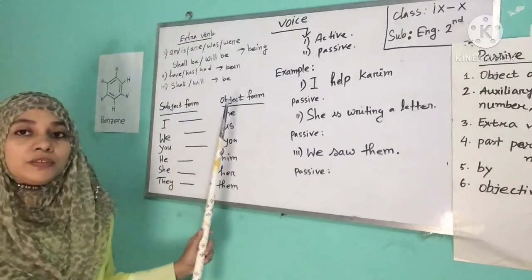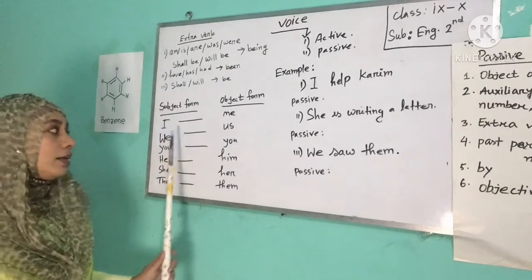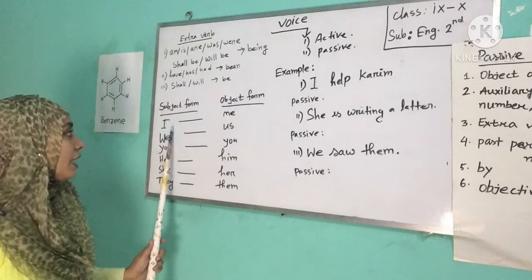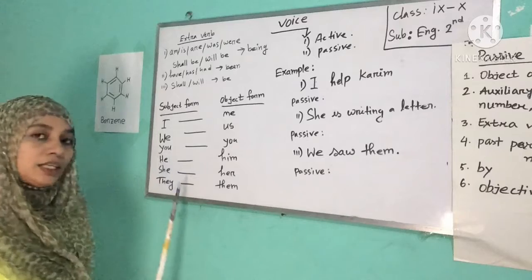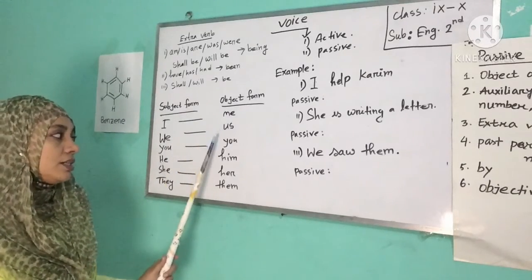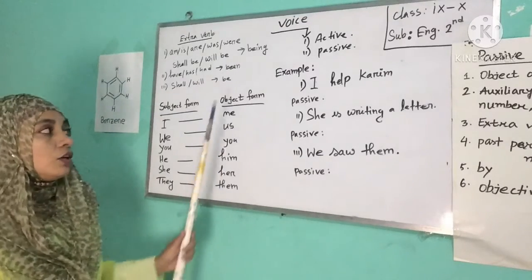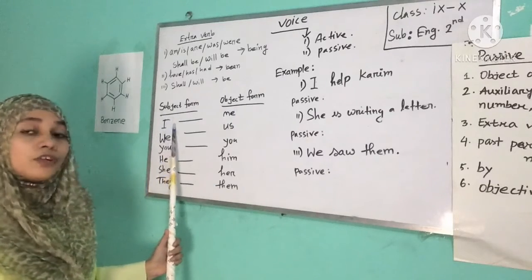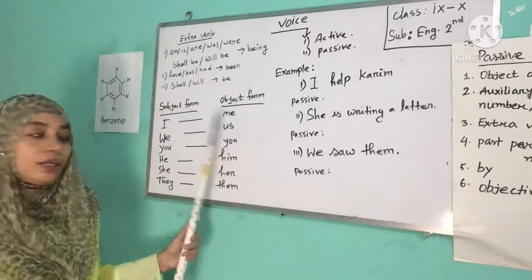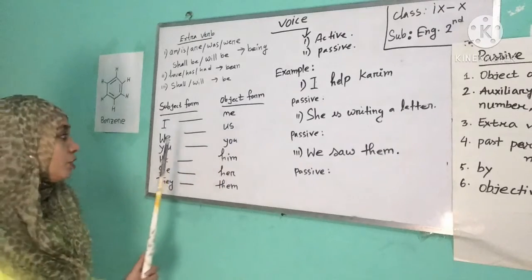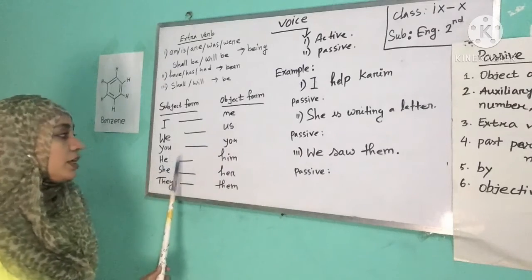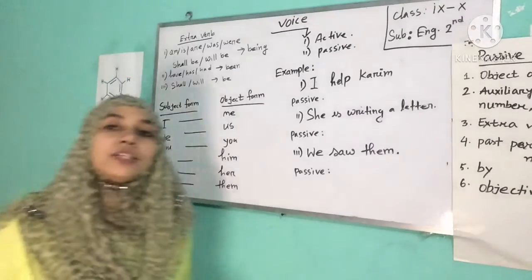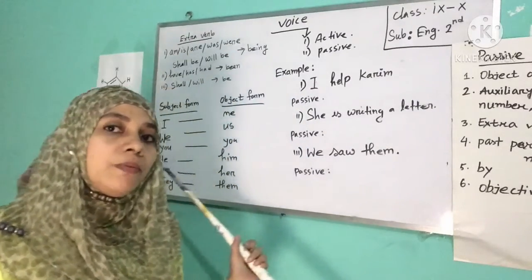Now for subject and object forms: the subject forms are I, we, you, he, she, they. The corresponding object forms are: object form of I is me, object form of we is us, object form of you is you, object form of he is him, object form of she is her, and object form of they is them.